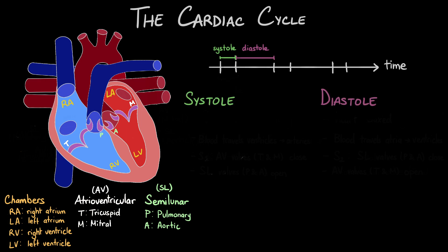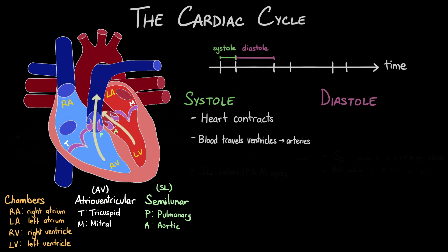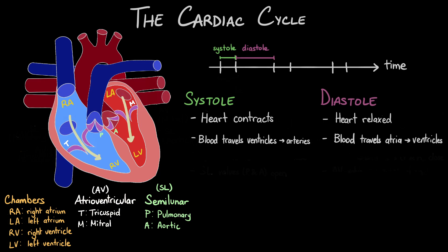Systole is the part of the cardiac cycle when the heart is contracting. The powerful ventricles of the heart contract to expel blood from the ventricles and into the arteries that lead to pulmonary or systemic circulation. Diastole is the part of the cardiac cycle when the heart is relaxed, and blood flows from the atria to fill up the ventricles.